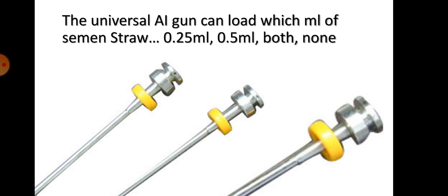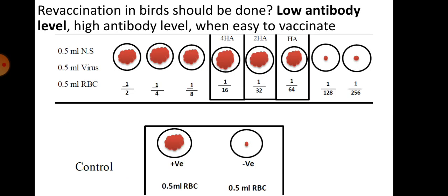Re-vaccination in birds should be done at low antibody levels. The photo shows the hemagglutination inhibition (HI) test, which is used to check the antibody titer for Newcastle disease and avian influenza in birds.